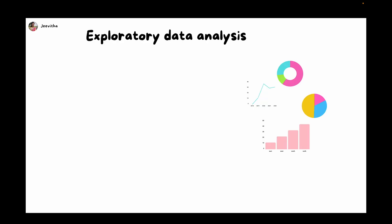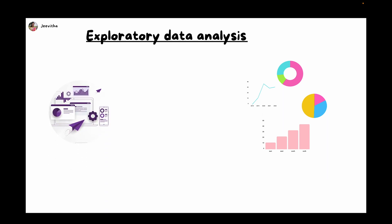The next step is exploratory data analysis. This is one important aspect of machine learning — it's like data analysis. Without understanding and exploring your data, it's really hard to do any machine learning project. Try to explore data by doing univariate, bivariate, and multivariate analysis. Under univariate, we analyze a single variable: we can check the distribution using a histogram, check whether data is balanced using a count plot, and check for outliers using a box plot.